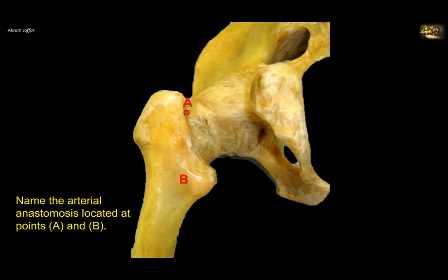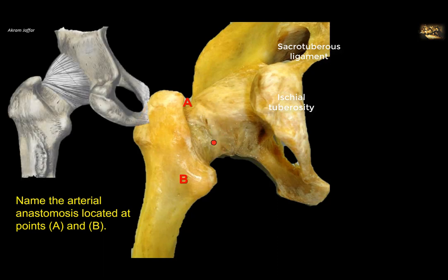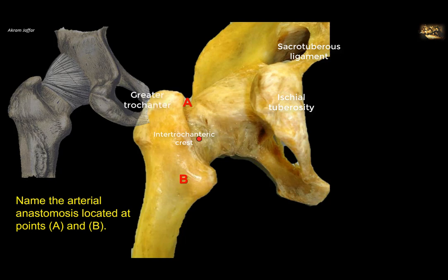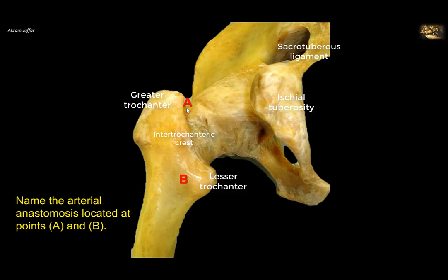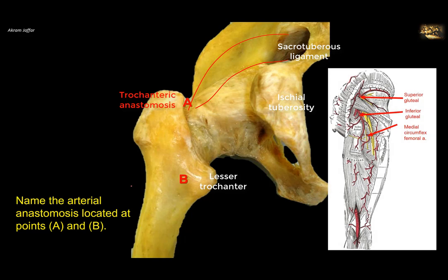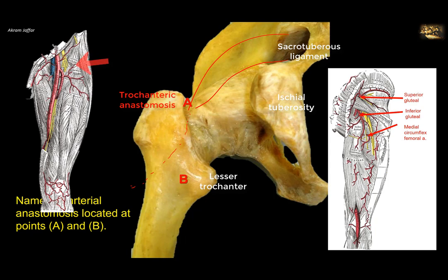In the arterial anastomosis located at points A and B — this is a posterior view of the hip joint. You can see the ischial tuberosity, sacrotuberous ligaments, and the obturator foramen. This is the head and neck of the femur within the capsule of the hip joint. The capsule does not cover the entire posterior surface of the neck — it is short of the intertrochanteric crest, which extends between the greater and lesser trochanter. The arterial anastomosis at the level of the greater trochanter is called the trochanteric anastomosis, formed by branches of the superior and inferior gluteal arteries, an ascending branch from the lateral circumflex femoral artery, and an ascending branch of the medial circumflex femoral artery. This anastomosis is very important for the supply of the head of the femur since it sends branches through the retinacula of the capsule — these arteries are called retinacular arteries.